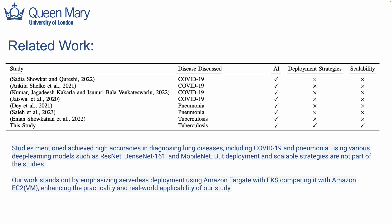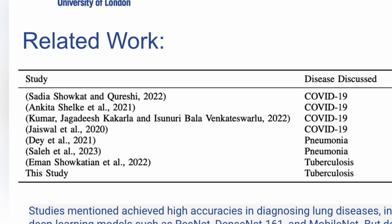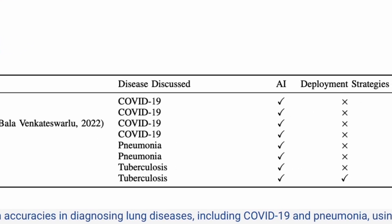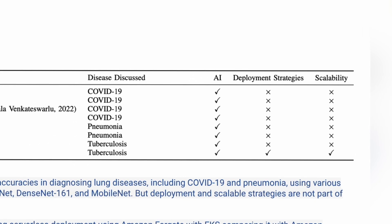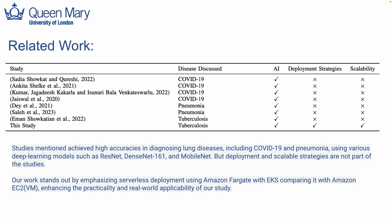There is a significant amount of research dedicated to diagnosing lung disease, including COVID-19 and pneumonia, using advanced deep learning models. The table displayed here provides a snapshot of various studies in this space. Notice the column for deployment strategies and scalability — except for our study, they all have a glaring X mark indicating a miss. The deployment and scalability of these AI models in real-world scenarios are left unexplored, which can be a roadblock in their practical application. This is where our work differentiates itself — we go beyond algorithmic performance, with our focus also on serverless deployment.